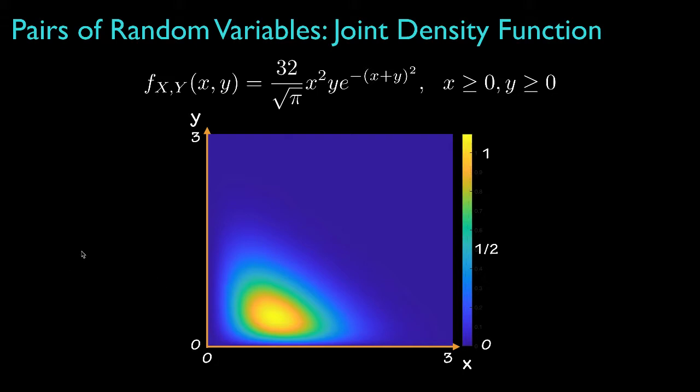Now, from this density, we can see that the most likely region for a realization of the pair of random variables is where the density is the largest. Of course, realizations outside of that region are possible, but that's the region where we would expect to see most of the realizations.